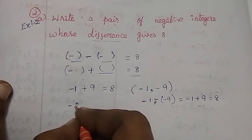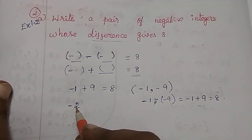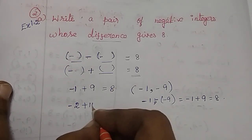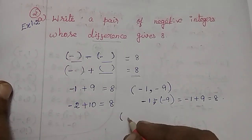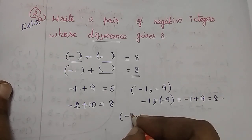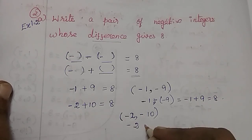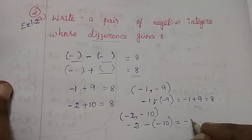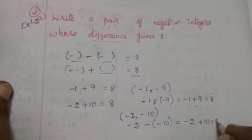If we take minus 2, does the answer 8 come? Minus 2 needs a number 8 more than it, so the plus number would be 10. The difference is 8. So the pair of numbers is minus 2, minus 10. Minus 2 minus of minus 10 equals minus 2, then minus into minus is plus 10, giving 8.